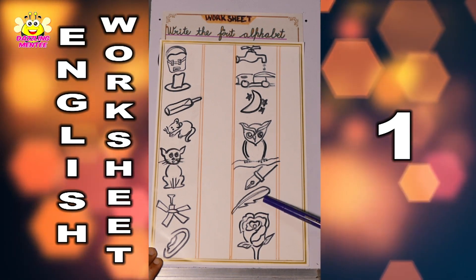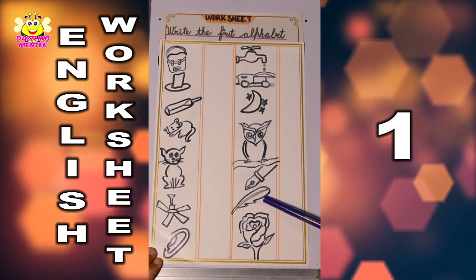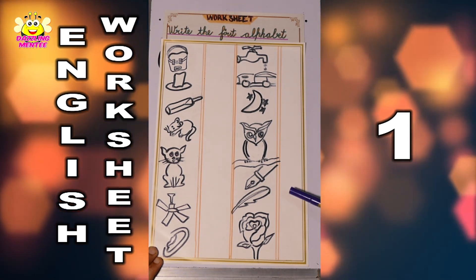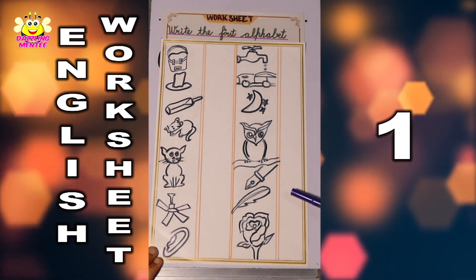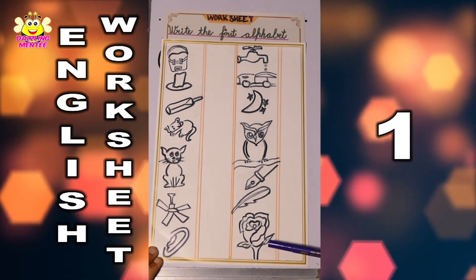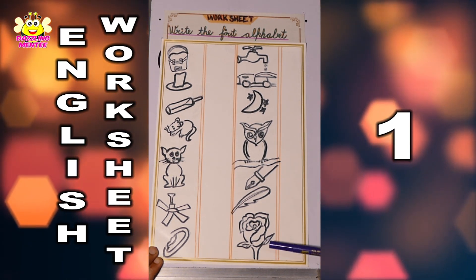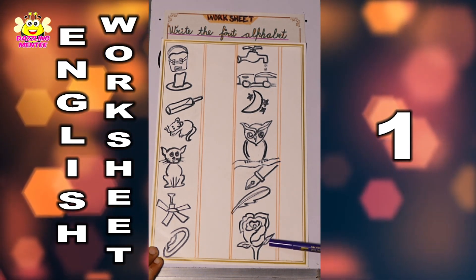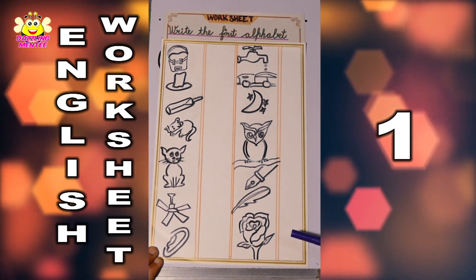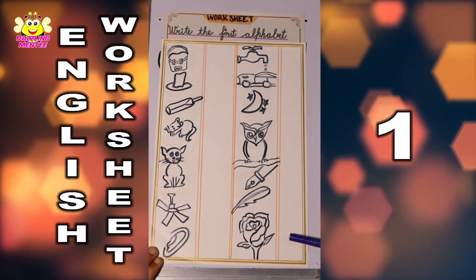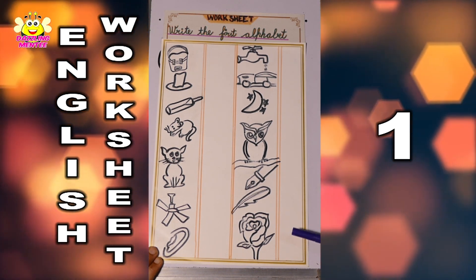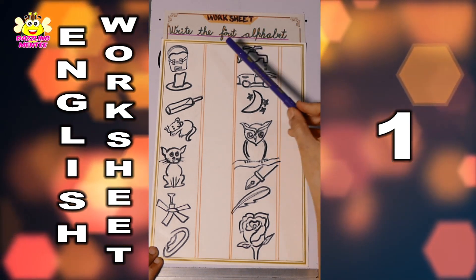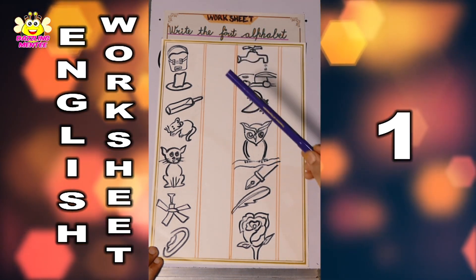Next picture is of quill and the sound is 'qu', so here the child will write Q. Next picture is of rose, so the sound is 'ruh', so here the child will write the first letter R. This way the child will learn how to write the alphabets and will recognize all the alphabets very nicely.